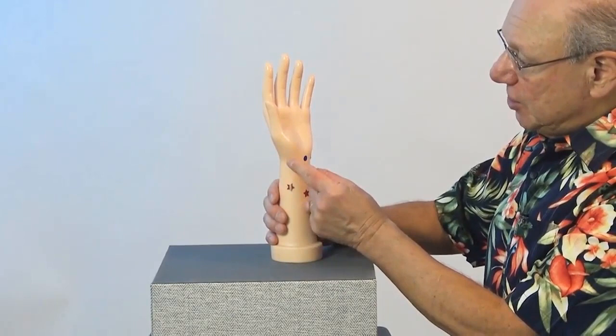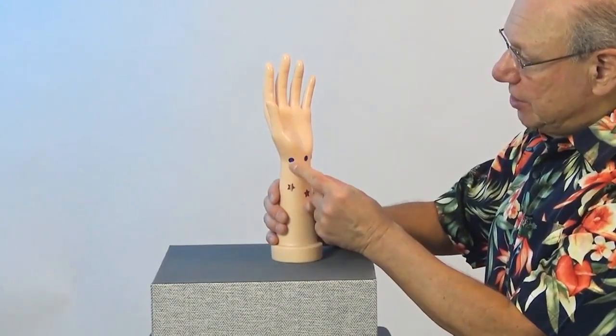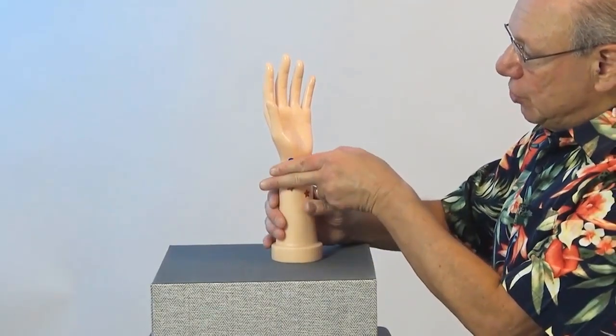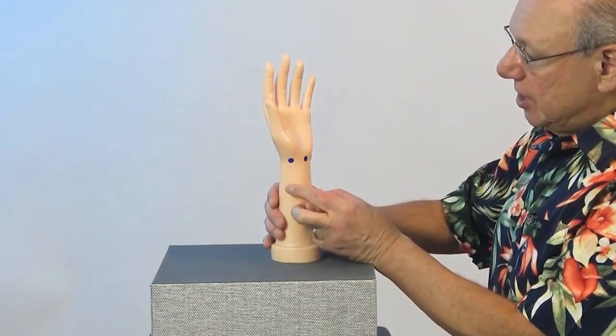And then find the spot that is just under your thumb right over here. Now find the point that is the width of two fingers below that, just about here.